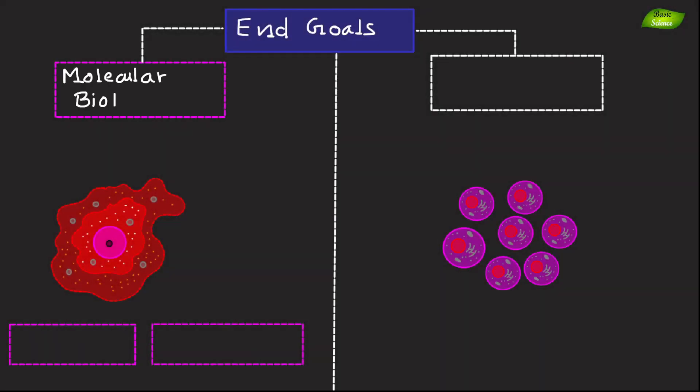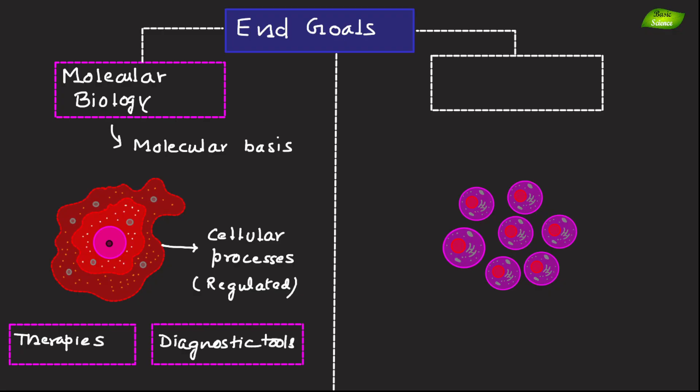The primary aim of molecular biology is to understand the molecular basis of cellular processes and how these processes are regulated. This knowledge can lead to the development of new therapies and diagnostic tools. An example includes developing targeted cancer therapies that inhibit specific proteins involved in cell growth and proliferation.